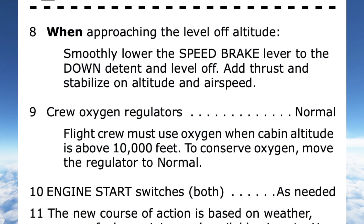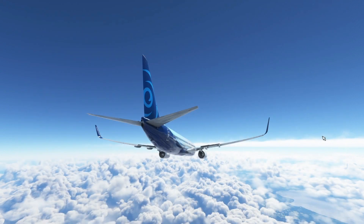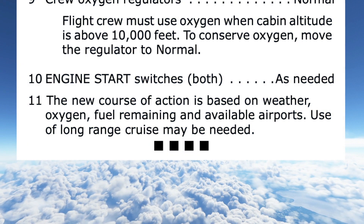When the aircraft approaches the level-off altitude, the speed brake can be moved to the down-detent and thrust added to stabilize altitude and airspeed. The crew oxygen regulators can be moved to the normal position to conserve oxygen. Step 10 informs that the engine start switches may now be set as needed. The final step provides guidance on creating a new course of action based on weather, oxygen, fuel remaining, and available airports. It also indicates the use of long-range crews may be needed.